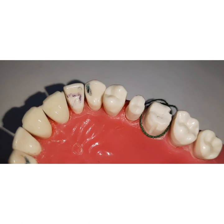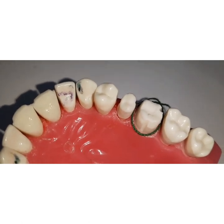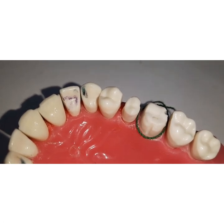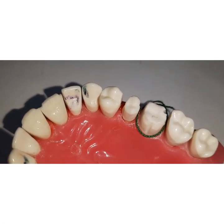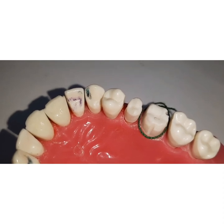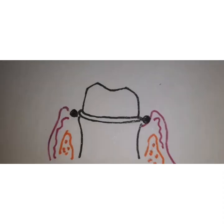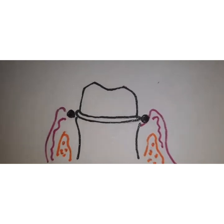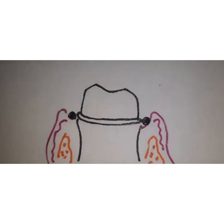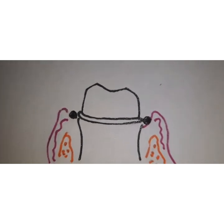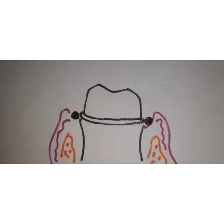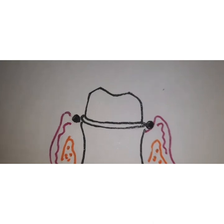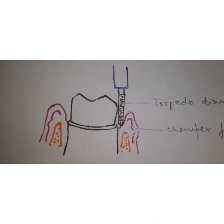Before removing the cord, ensure the field is dry and be ready for the impression. Mix the impression material and make the impression as soon as you remove the retraction cord. The cord displaces the gingival sulcus temporarily, and once removed, you can capture the details of the finish lines.